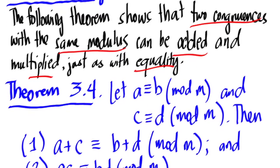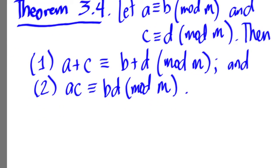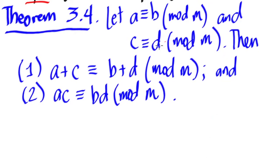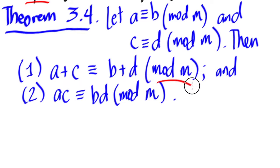Theorem 3.4 states that — and I believe this will be very familiar to you — let A be congruent to B mod M, and C be congruent to D mod M. Then, A plus C is congruent to B plus D mod M. That is for addition. For multiplication, A times C is congruent to B times D mod M.